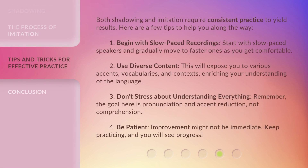Both shadowing and imitation require consistent practice to yield results. Here are a few tips to help you along the way. Tip 1: Begin with slow-paced recordings. Start with slow-paced speakers and gradually move to faster ones as you get comfortable. Tip 2: Use diverse content. This will expose you to various accents, vocabularies, and contexts, enriching your understanding of the language.